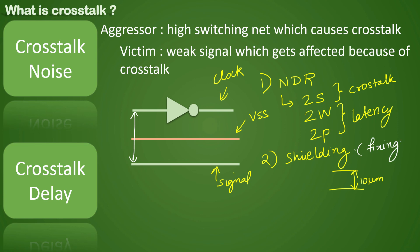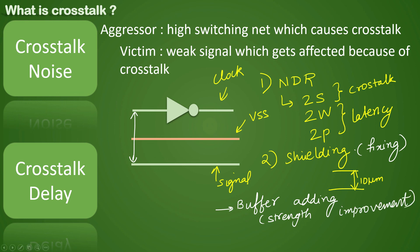The most common method for fixing crosstalk is buffer addition. If the victim's strength is low and the transition is going bad, or the signal has voltage droops or bumps, adding a buffer at the driver input gives strength to the signal. Buffer addition for strength improvement is the primary fix for crosstalk. That is all for this video — please like, share, and subscribe, and give your feedback in the comments. Thank you.